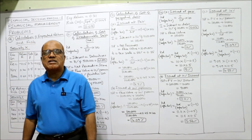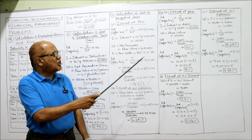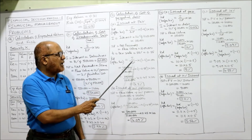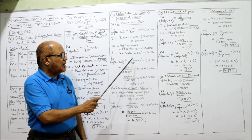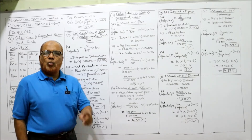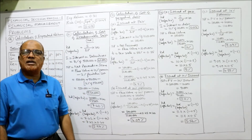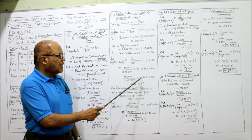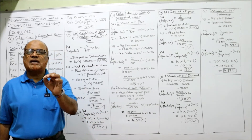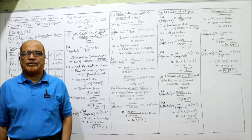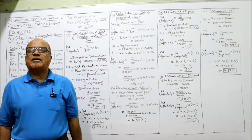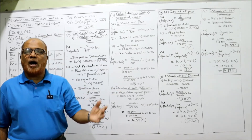T = 55% = 0.55. KD after tax = I / NP × (1 - T) × 100 = 1 lakh / 10 lakh × (1 - 0.55) × 100 = 0.1 × 0.45 × 100 = 4.5%. KD after tax for the first case (issued at par) is 4.5%.